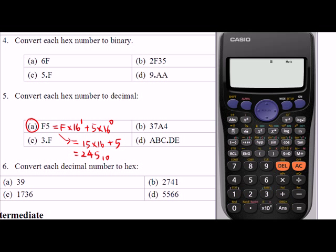Okay, the following demo will show you how to convert hexadecimal number to decimal number. We look at question 5a. You want to convert F5 hexadecimal number to decimal number. In the expanded notation, F5 is F times 16 to the power of 1 plus 5 times 16 to the power of 0.